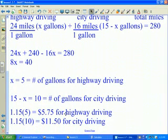Now to calculate the cost. Well, the cost for highway driving: $1.15 per gallon times 5 gallons, $5.75 for highway driving. $1.15 per gallon times 10 gallons, $11.50 for city driving.